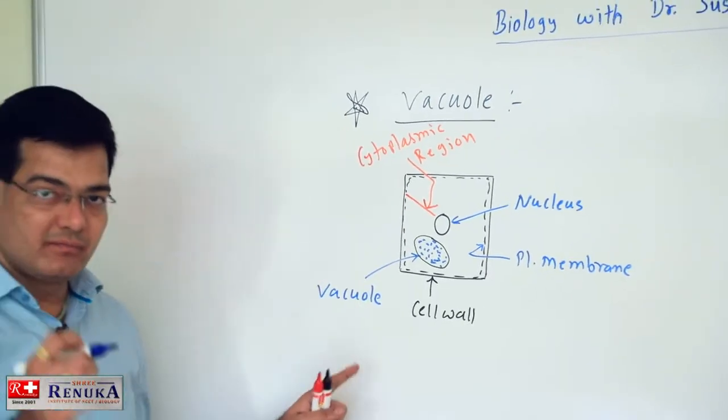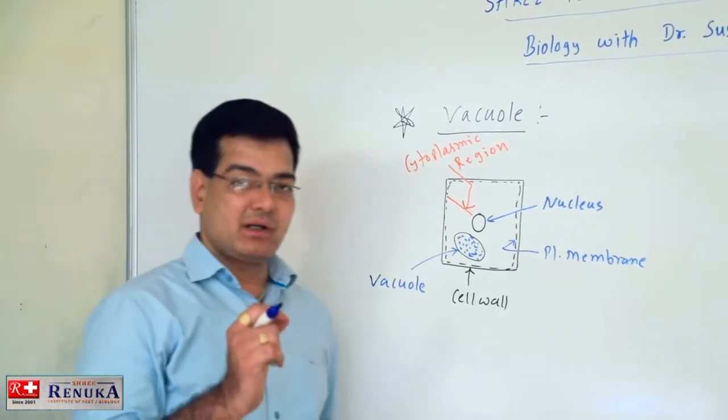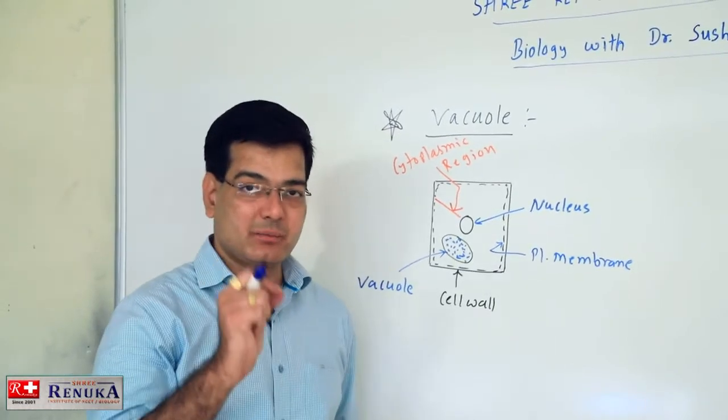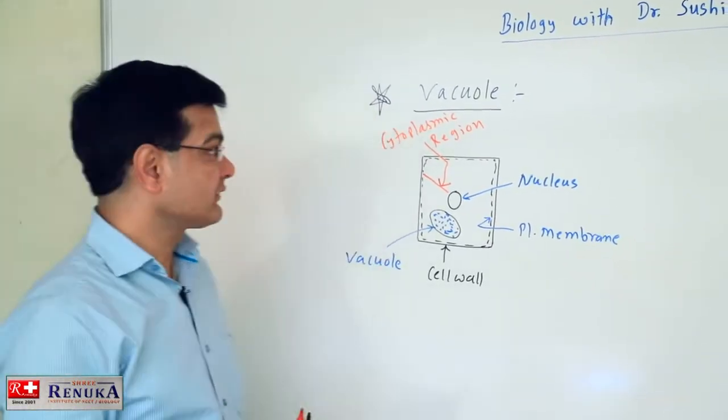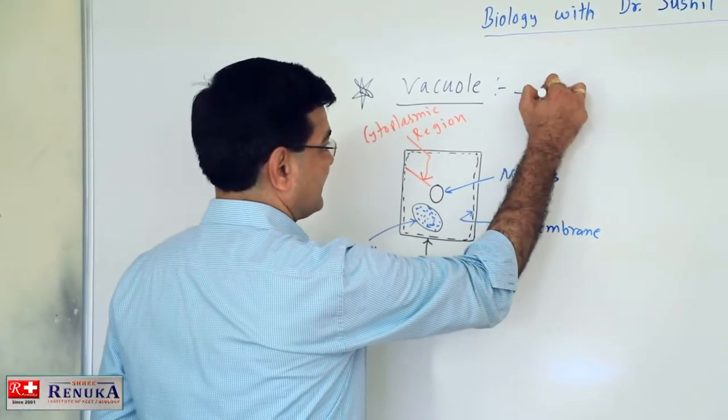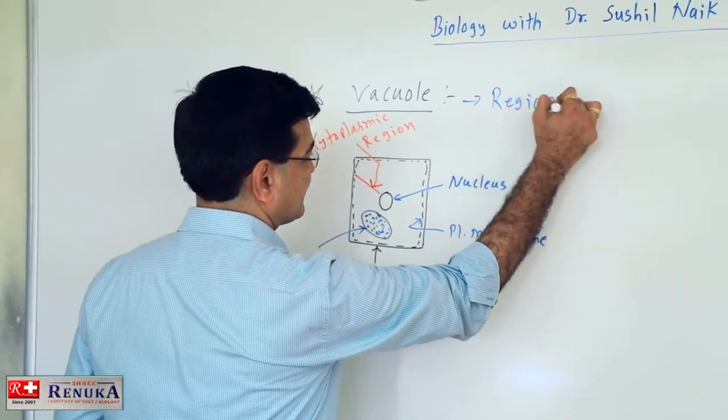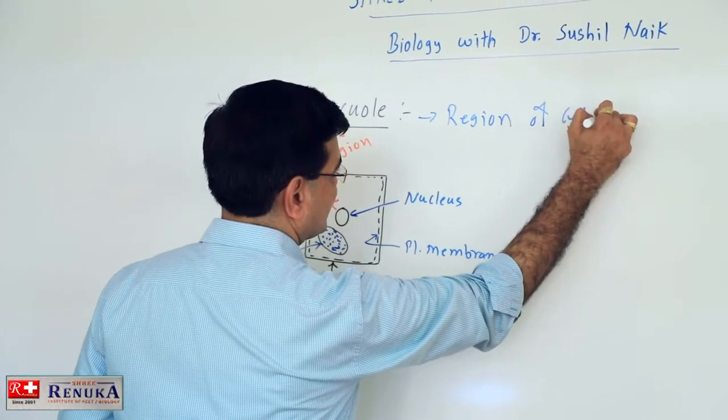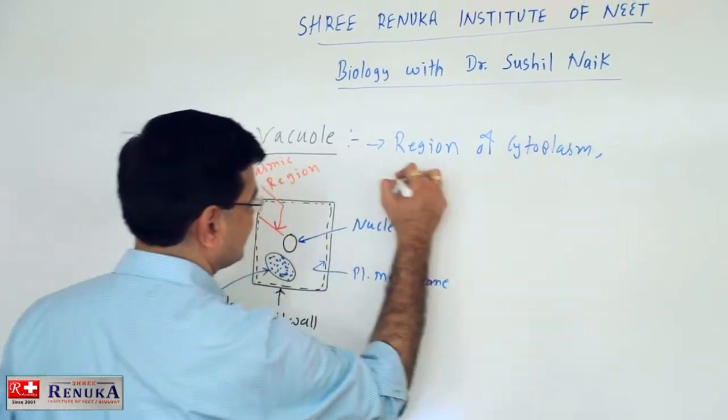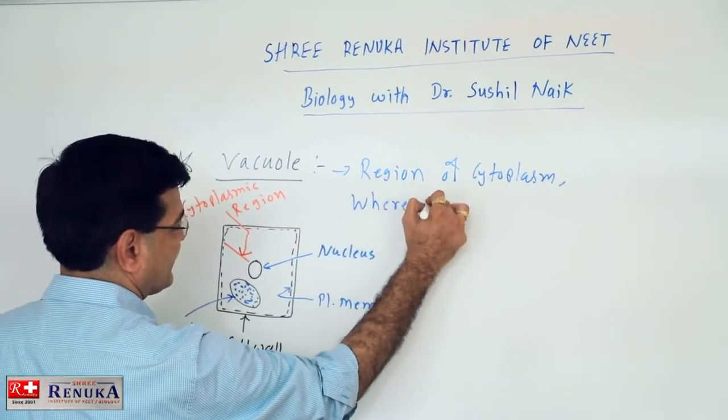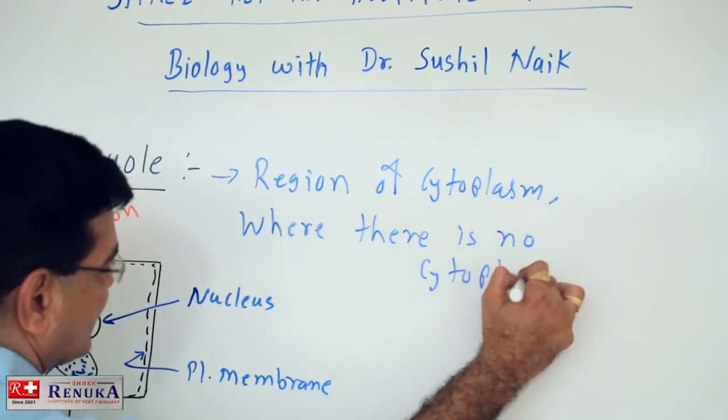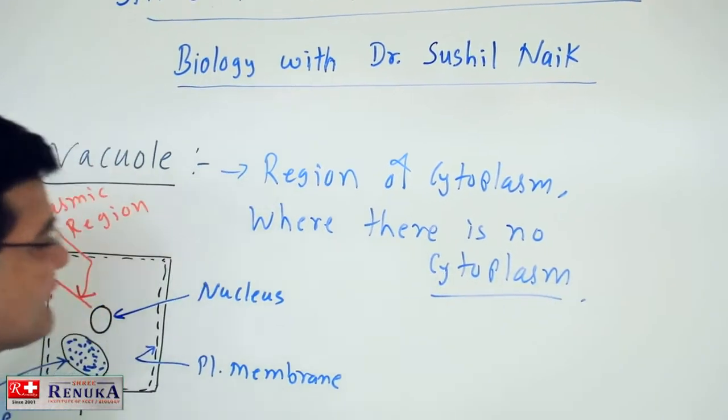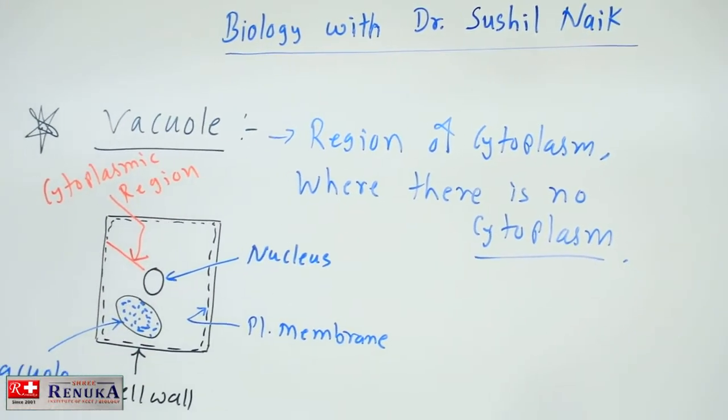Vacuole is found in the region of cytoplasm where there is no cytoplasm. There vacuole is present.